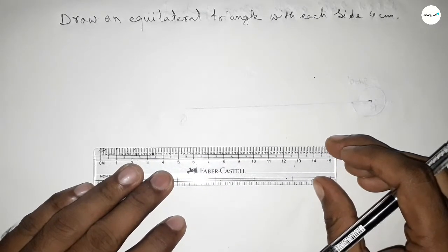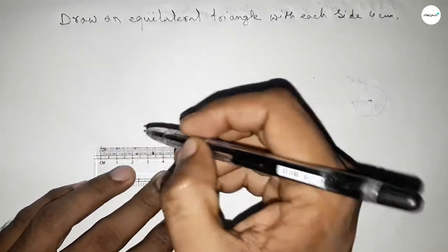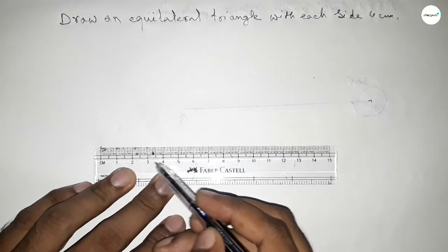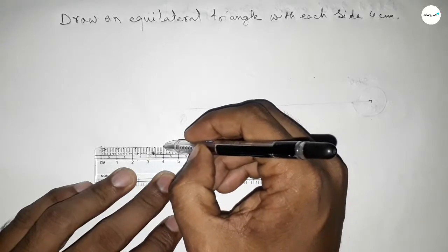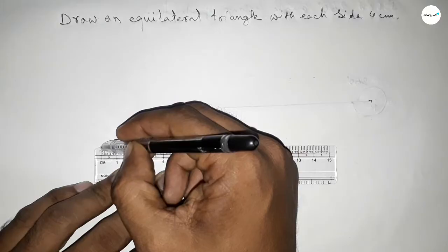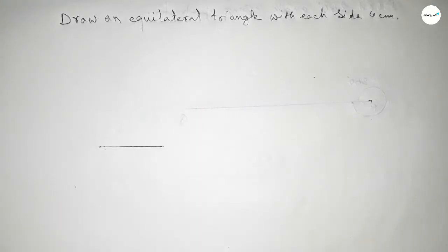First of all, we have to draw a line of length 4 centimeters using a scale. Starting at zero, then 1 centimeter, 2 centimeters, 3 centimeters, and 4 centimeters. Taking a length of 4 centimeters by scale.